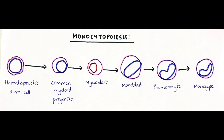In monopoiesis, a myeloblast is formed from the common myeloid progenitor, and a monoblast is formed from the myeloblast. The monoblast is the committed progenitor cell found only in the bone marrow, with a basophilic cytoplasm and no granules. These monoblasts give rise to promonocytes, which are smaller in size with nuclei that become slightly indented before becoming monocytes. Monocytes have a kidney-shaped nucleus and can develop into dendritic cells or macrophages.